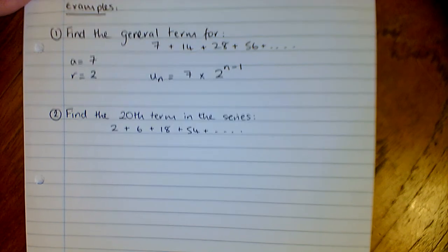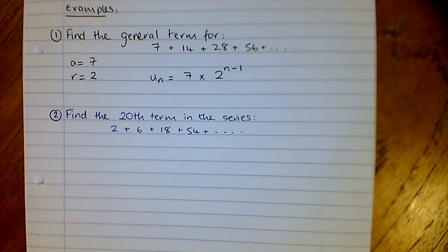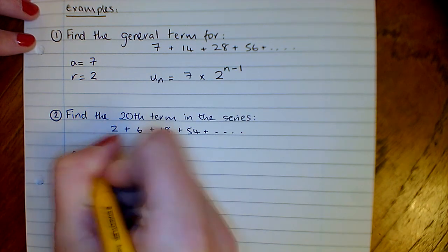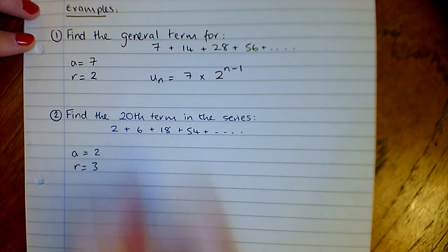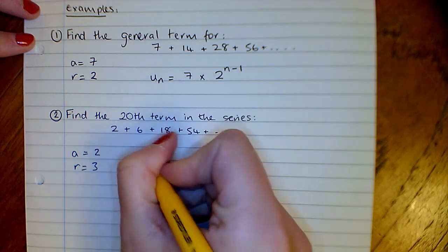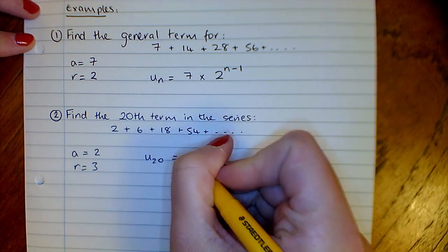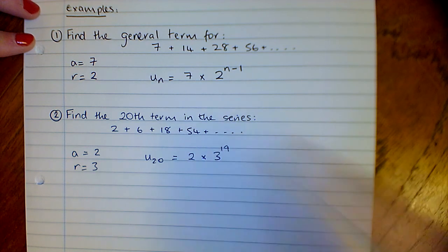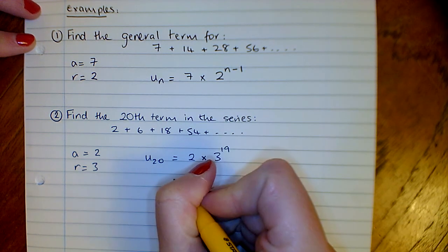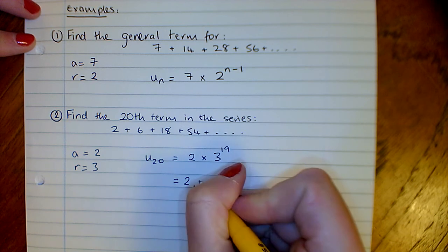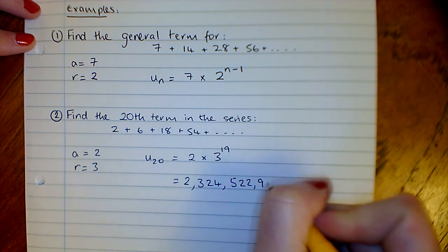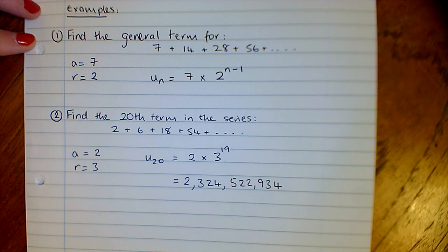Our second one, find the 20th term in the series 2 plus 6 plus 18 plus 54, etc. Here A is 2, our ratio this time is 3, and our 20th term is 2 times 3 to the power of n minus 1. So 2 times 3 to the power of 19, and we get a massive big number for that. That's the 20th term of that series.